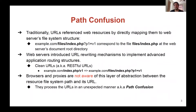Traditionally, URLs reference resources by directly mapping them to the web server's file system structure. For example, example.com/files/index.php corresponds to the file files/index.php in the web server document root directory. But web servers also introduced URL rewriting mechanisms as an abstraction to implement advanced application routing structures. In a RESTful or clean URL, example.com/index.php/v1 clearly maps to example.com/files/index.php with parameter p1 equal to v1. Browsers, proxies, and other man-in-the-middle HTTP components are not aware of this layer of abstraction between the resource file system path and its URL. They process the URL in an unexpected manner, also known as path confusion — where web servers parse and interpret URLs in a way that is not clearly reflected in the externally visible URL.